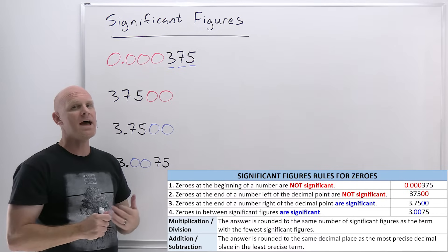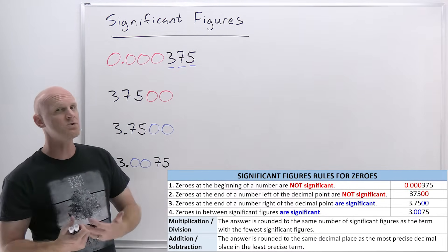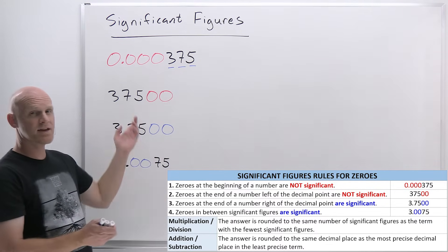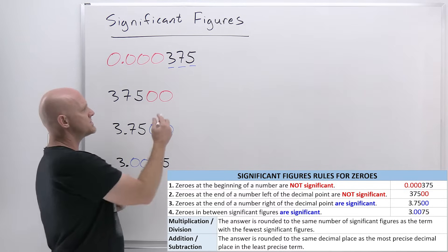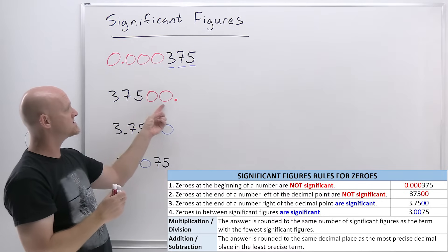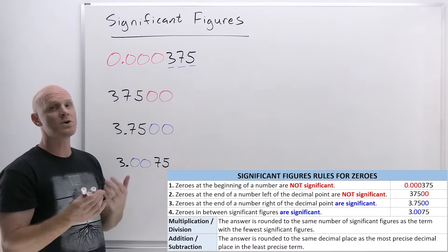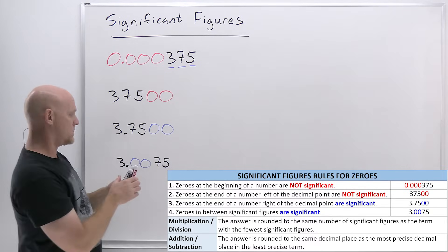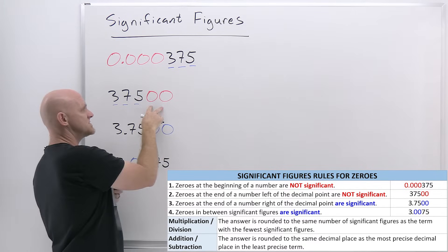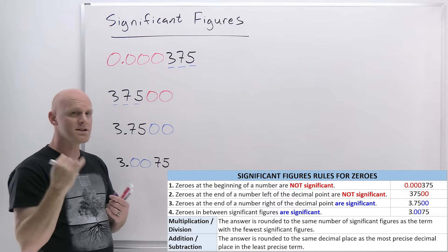When a number ends in zeros, there are two parts to this rule — it depends whether they're left or right of the decimal. When they're left of the decimal, numbers bigger than one usually don't include the decimal; it's invisible but implied. So zeros ending a number left of the decimal are not significant. The three, seven, and five are all significant, but the two zeros are not. So 37,500 has three significant figures.